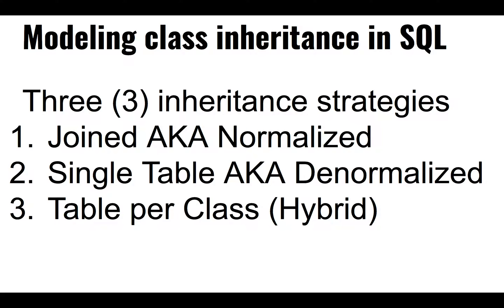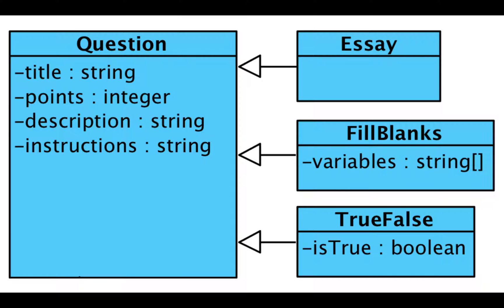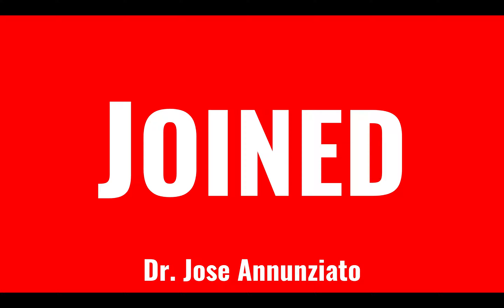The joined version is also referred to as the normalized strategy. The single table is also referred to as the denormalized strategy. Then you have the table per class version, which is kind of like the best of both worlds. The first two each have pros and cons, and the third tries to borrow the best of both.